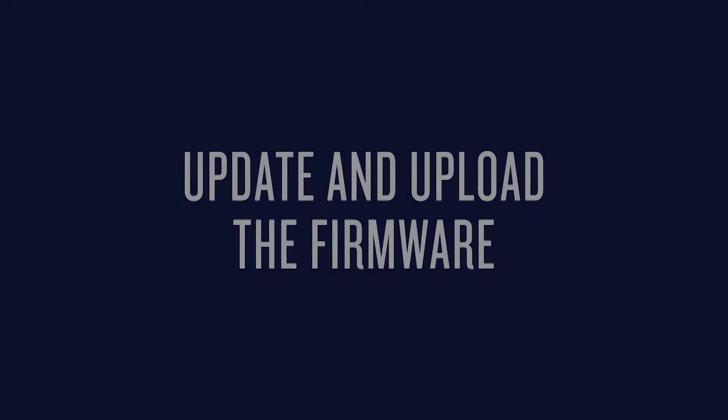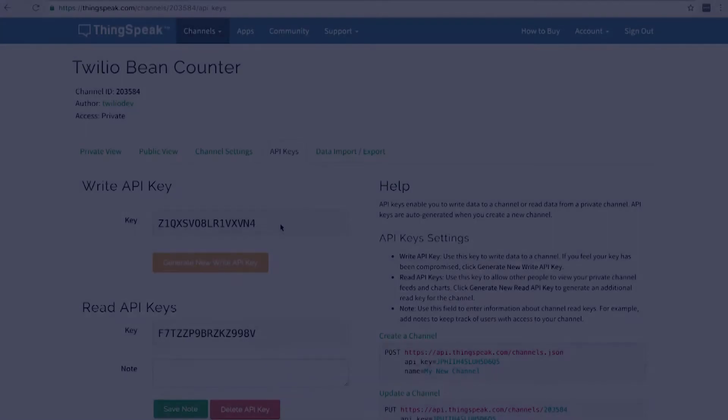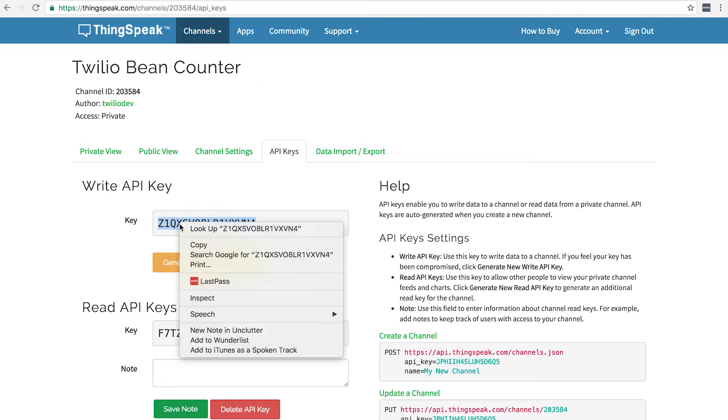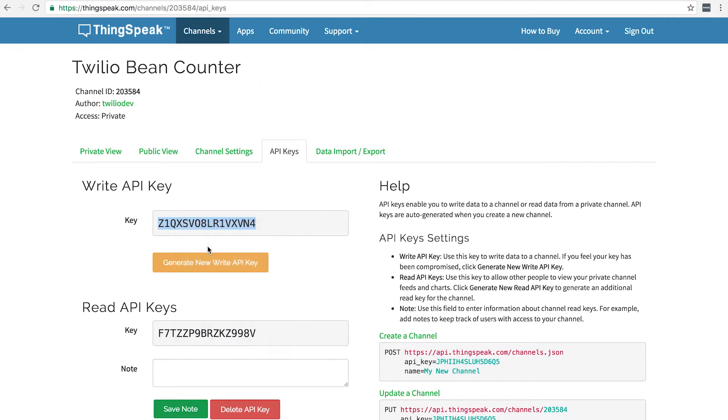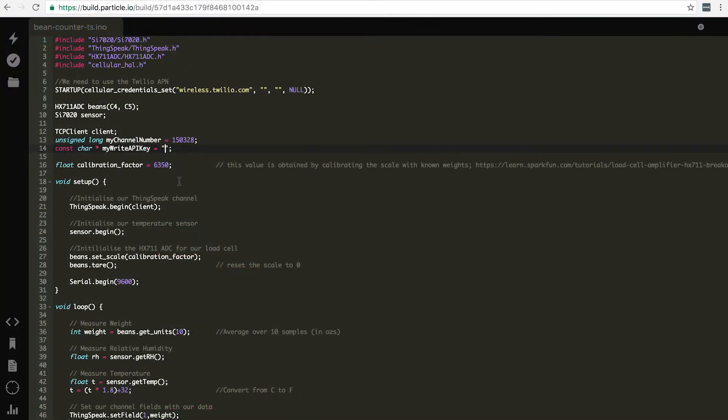Now that you've set up your ThingSpeak account, we need to update and upload the firmware. We'll put the firmware on the electron that will handle reading the values from our sensors and sending them to ThingSpeak. You'll need to download our simple example code, open it in your favorite text editor, and replace a few values with information from your ThingSpeak account. Check out GitHub for further instructions.